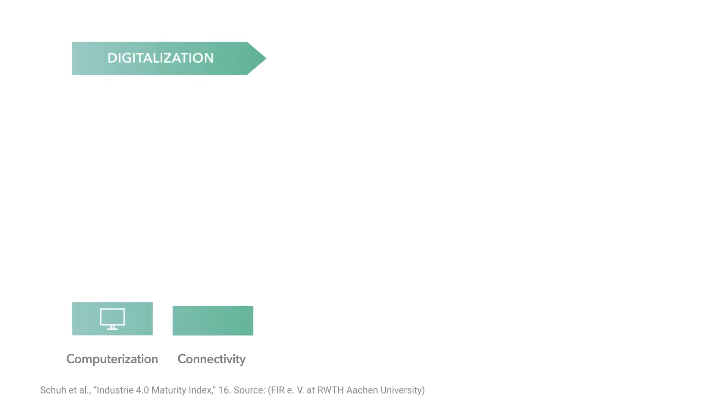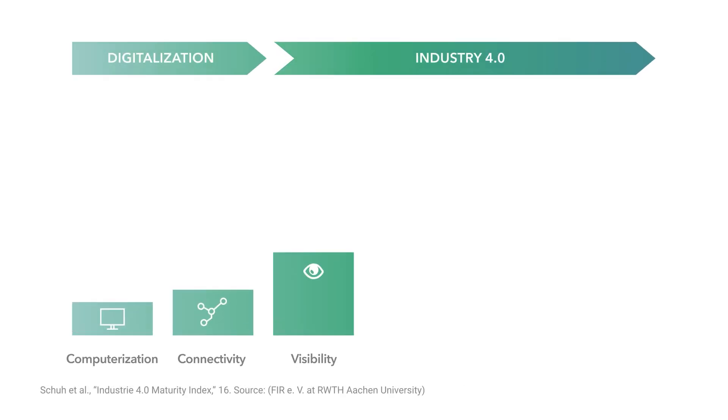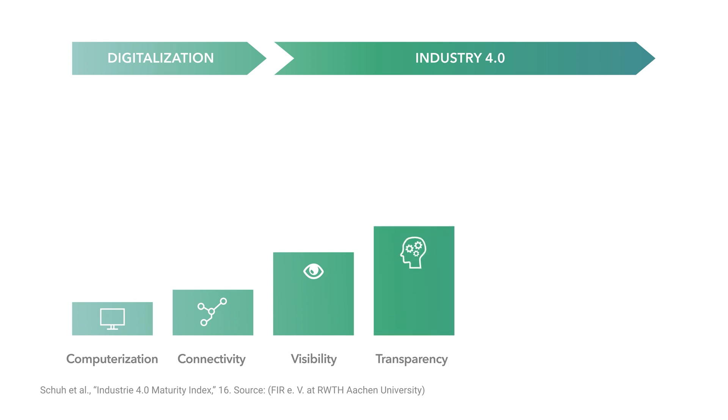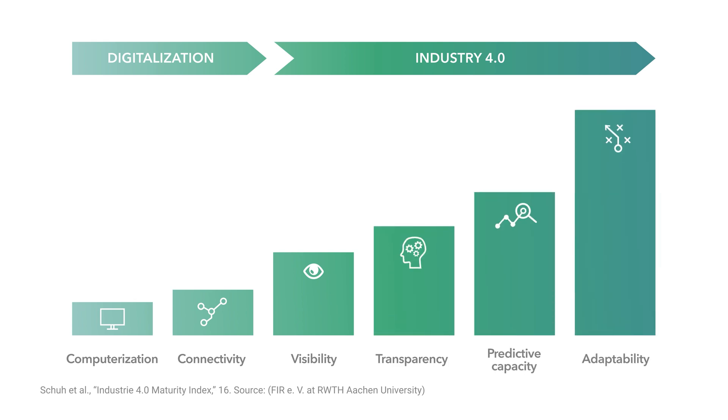Germany's Academy of Science and Engineering has produced an Industry 4.0 maturity index, which describes six stages of digital transformation: computerization, connectivity, visibility, transparency, predictive capacity, and adaptability.